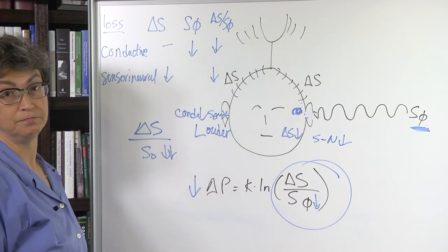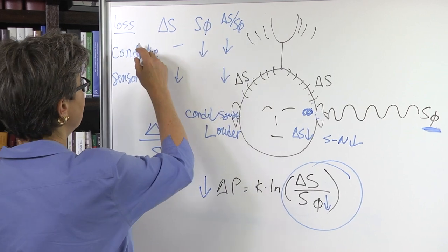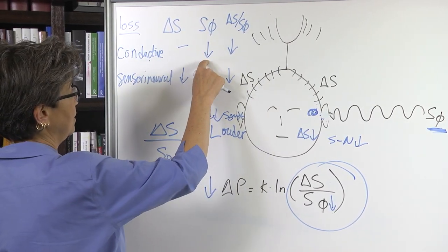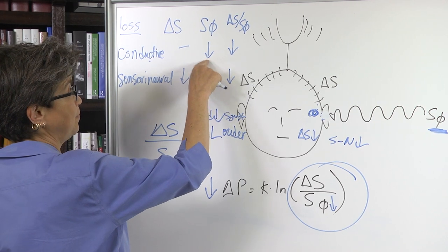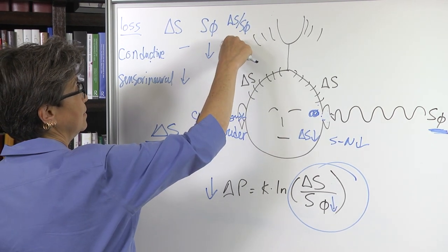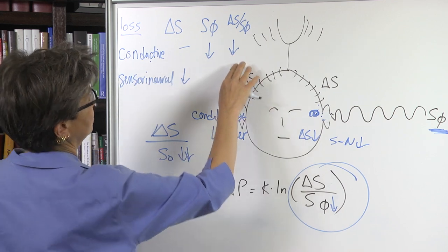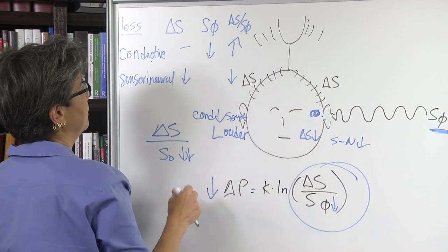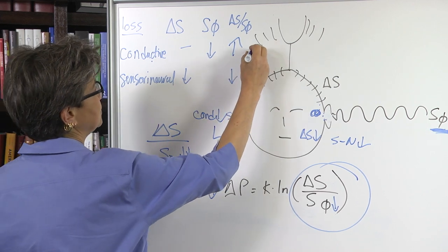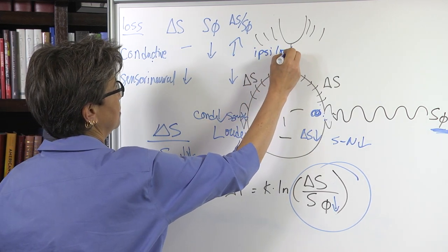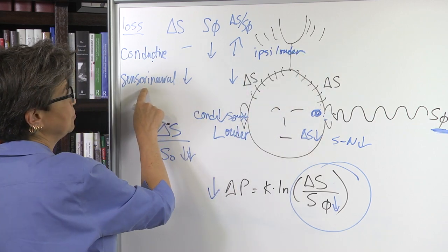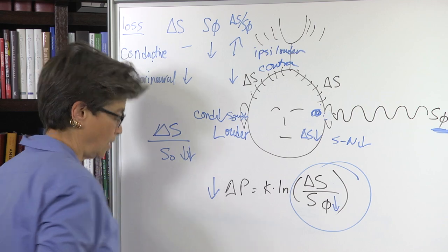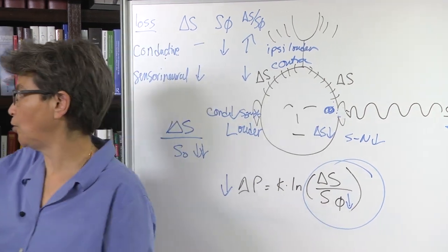And that's summarized here. If you have a conductive loss, that's due to a decrease in the background activity that is going to make this go up. So this is ipsilateral to the louder side. And in the sensory neural, it's contralateral. Let's go over to the slides for a moment.